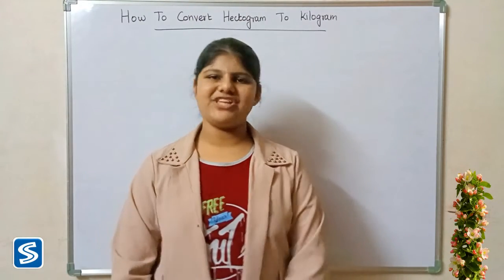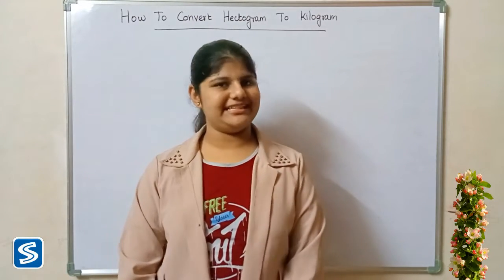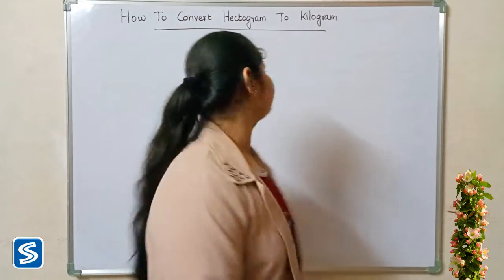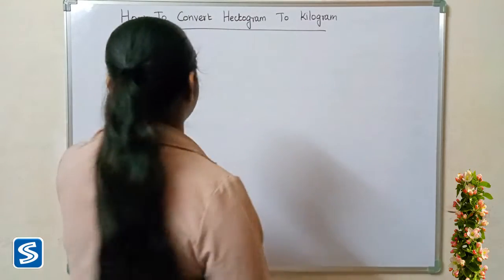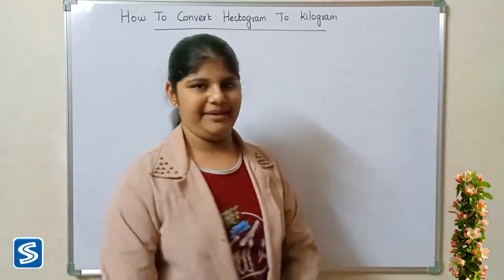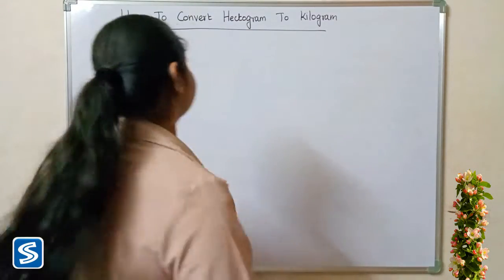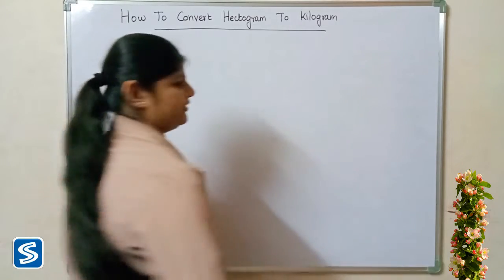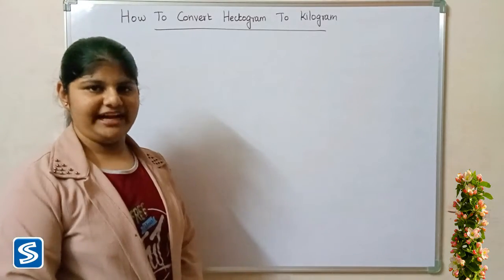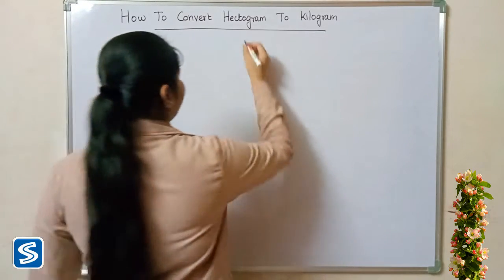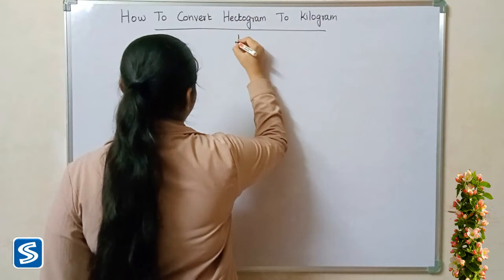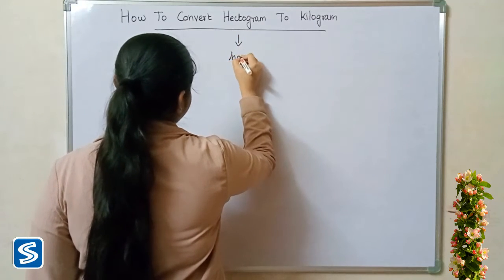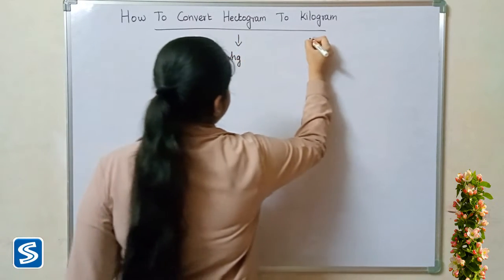Hi friends, welcome to Samish channel. In this video I am going to teach how to convert hectogram into kilogram. Hectogram and kilogram are units of weight in the metric system. The short form of hectogram is hg.